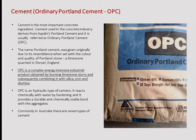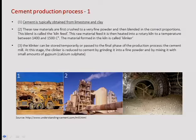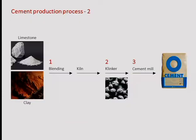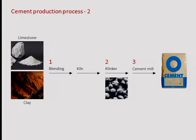You take limestone and clay, crush it into a powder — that's the base for concrete. You then burn it in a kiln to get clinker, crush it again into another powder, and that is ordinary Portland cement — the product you use together with water and aggregates. Fairly simple, but highly industrialized.